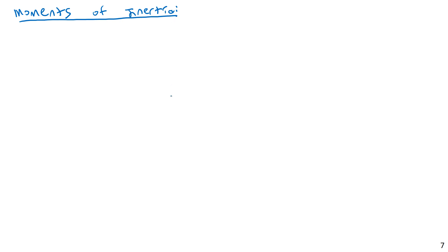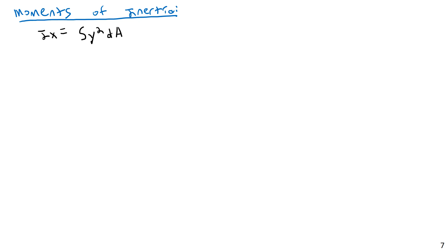So moments of inertia — specifically area moments of inertia. I'm not going to use the term 'area moment of inertia' throughout this lecture because in this context, as we saw in part one, there is more than one type of moment of inertia, but we will be focusing on area moments of inertia. The formula: Ix is equal to the integral of y squared dA, and Iy is equal to the integral of x squared dA.